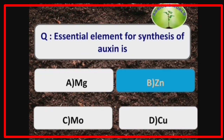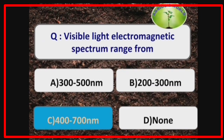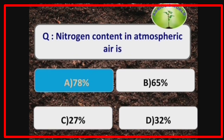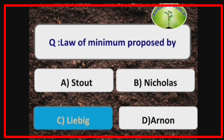The essential element for synthesis of auxin is zinc. The visible light electromagnetic spectrum range is 400 to 700 nanometers. Nitrogen constitutes about 78% of atmospheric air.